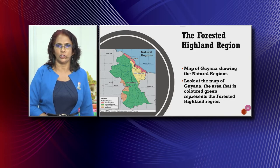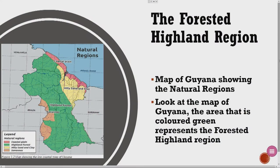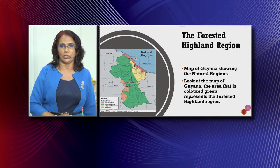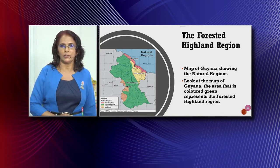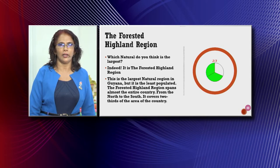The forested highland region. Looking at the map of Guyana showing the natural regions, at the top you have the low coastal plain. Then you have the huge green area that is the forested highland region. We also have the hilly sand and clay region and the savannas. But today we are only looking at the forested highland region. The area colored green represents the forested highland region.